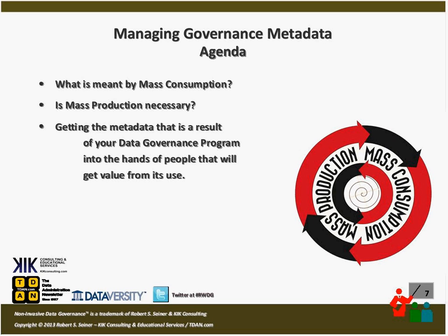My suggestion is that we record this information — so if there's a change to a business rule associated with the data, we know who we need to share that information with, and who needs to be certified when a change to a business rule or a regulatory or compliance rule takes place. It may not be mass production, but it has to be at least a managed level of production. The goal is to get the metadata that is a result of your governance program — governance metadata — into the hands of people that will get value from its use.